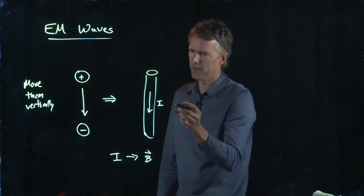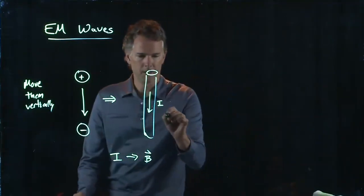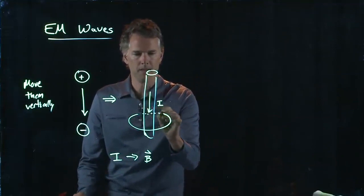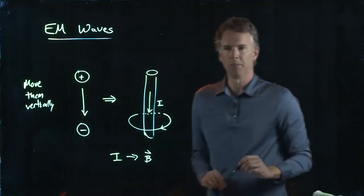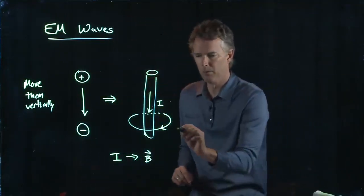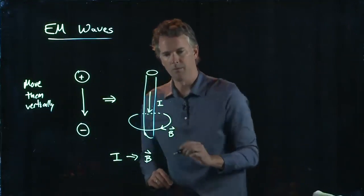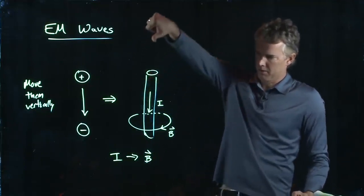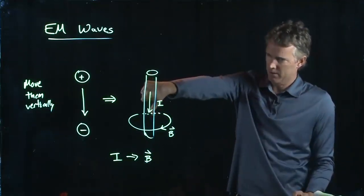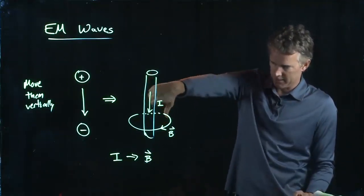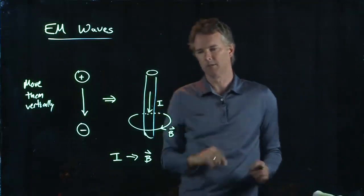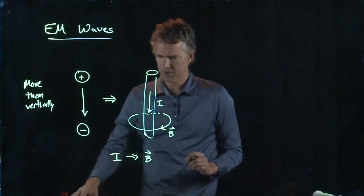And so there is a magnetic field that develops here. How does it develop? Like that. And you can pick the direction based on the right-hand rule. Remember, you put your thumb in the direction of the current. So stick your thumb down in the direction of the current. Your fingers are going to wrap around in the direction of B. And so we get a B field that looks like that for this particular picture.